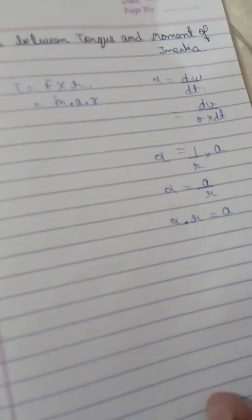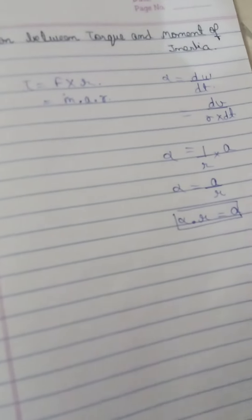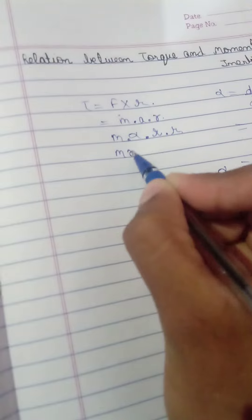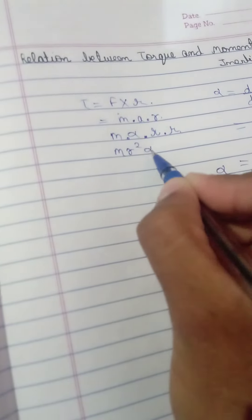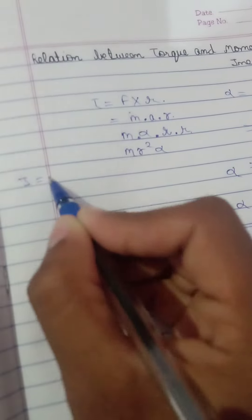So we write this acceleration value: mass into angular acceleration into radius into radius. This becomes mr squared times angular acceleration. We know that moment of inertia I equals mr squared.